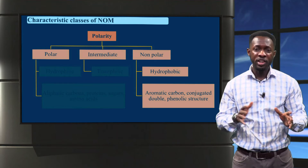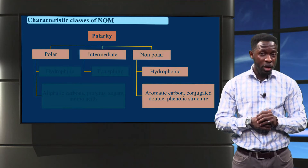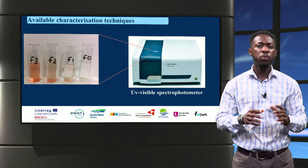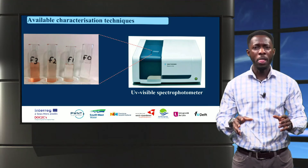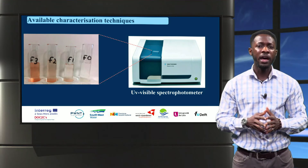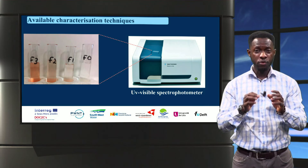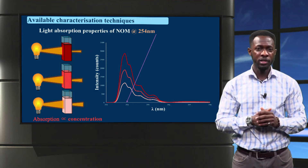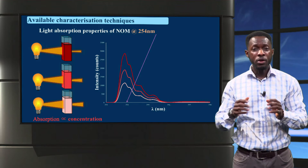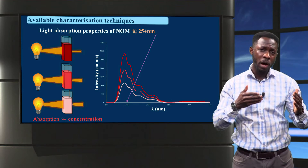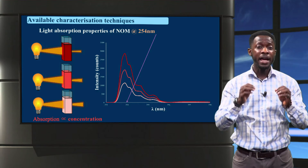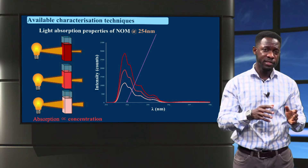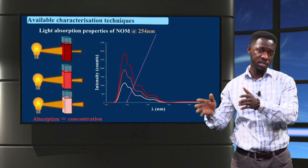Now let's see some available characterization techniques. The components of NOM contain atoms and groups that are responsible for the color of NOM. Thus, it is possible to measure the absorption property of NOM by passing ultraviolet light through it at a specific wavelength. You can see from this image three water samples with different concentrations of NOM represented by the color gradients. When UV light at 254 nanometers is passed through them, part of this light is absorbed. The higher the NOM concentration, the higher the light absorption. The different absorption intensities are registered in the form of a spectra, as can be seen on the far right.